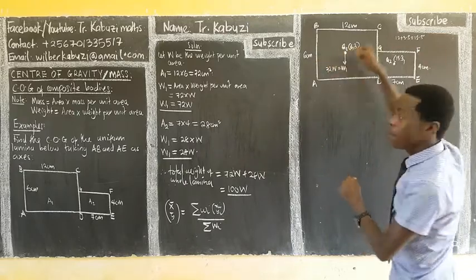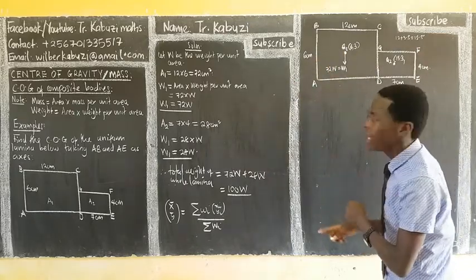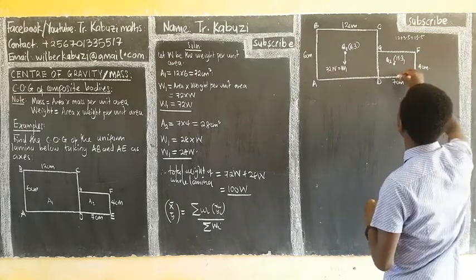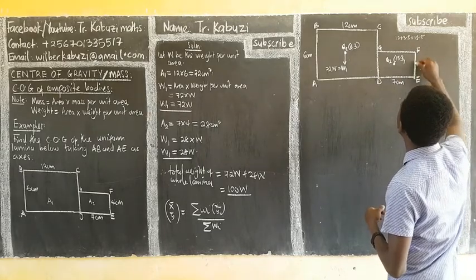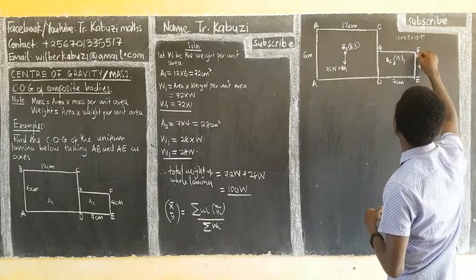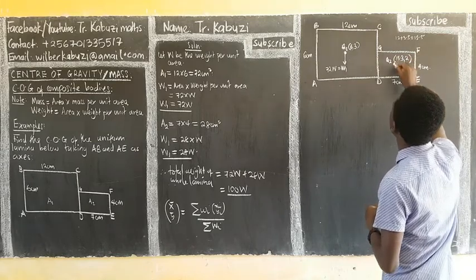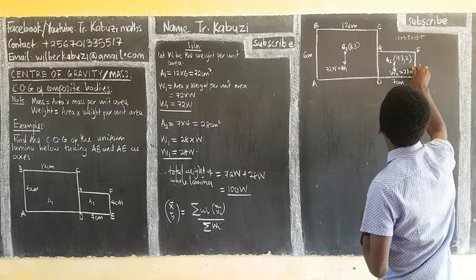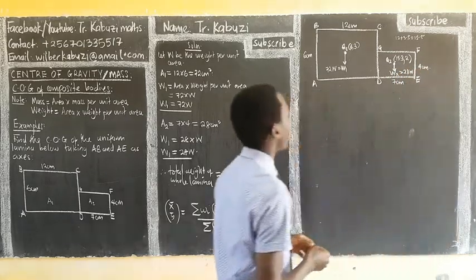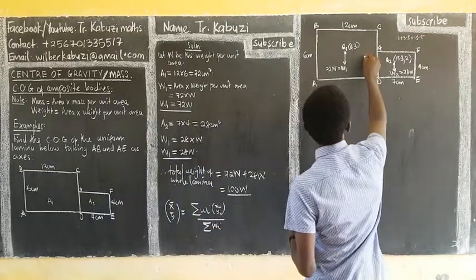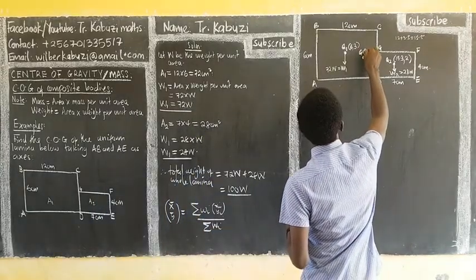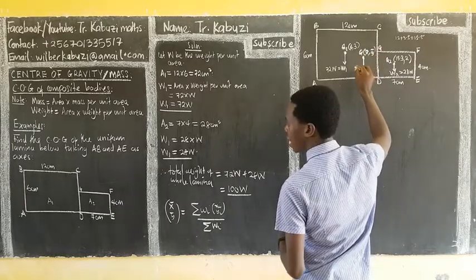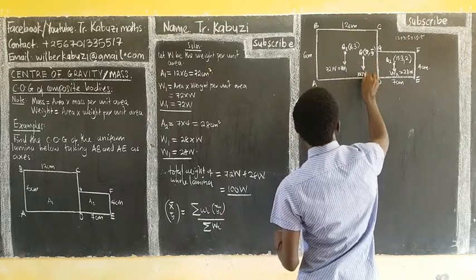From the AE axis, for the second section which has height 4, the center is half of 4, which is 2. So the y-coordinate for W2 is 2. Therefore, our second weight W2 = 28W acts at coordinates (15.5, 2). Let the total weight of the whole lamina act at (x̄, ȳ). The total weight of the whole lamina is 100W.